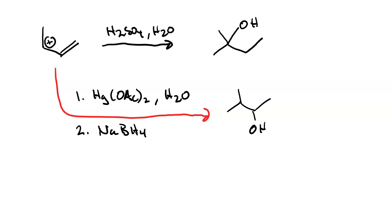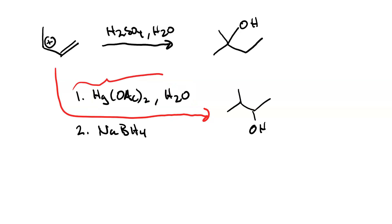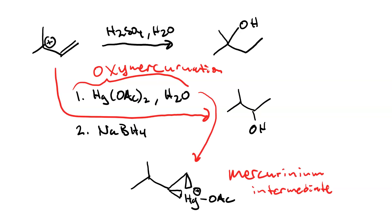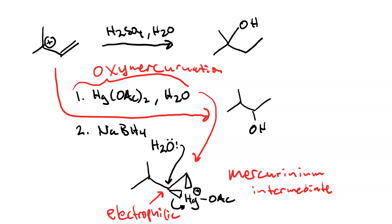This is a two-step process. Your first set of reagents are mercuric acetate and water. That first step is the oxymercuration step. It forms a three-membered cationic cyclic intermediate called a mercurinium intermediate. The most electrophilic site in the mercurinium intermediate is the more substituted ring carbon, and that's where water attacks. This puts the hydroxyl group in the more substituted position — the Markovnikov product.